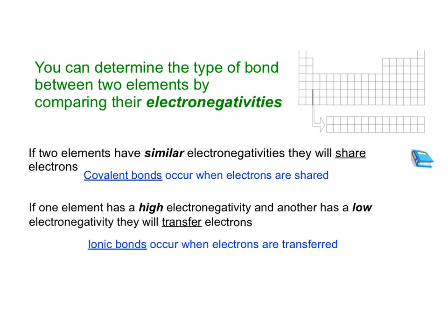You can determine the type of bond based on the electronegativities of the two elements involved. Electronegativity is the tendency to attract electrons to yourself when in a bond. Two elements that have similar electronegativities means they're going to attract electrons equally — that's considered a covalent bond.